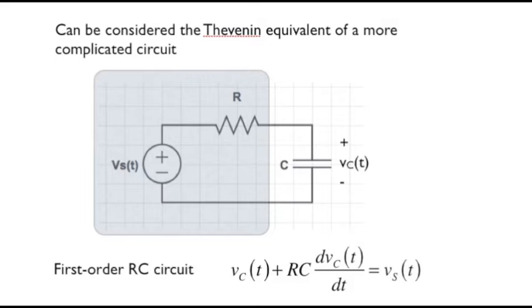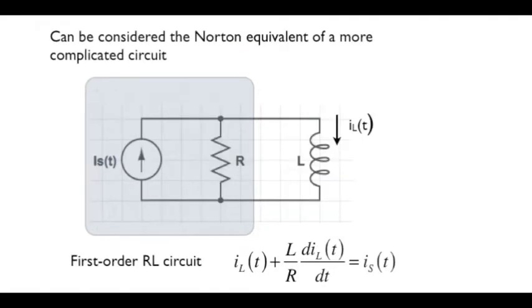We derived the equation on the bottom of the screen using connection constraints and element constraints. Note that it's a first-order differential equation, and that the highest-order derivative is a first-order derivative. And now we want to describe a general solution approach for this type of equation. We've also mentioned RL circuits in today's lesson, and here's a corresponding schematic. Again, this is more generally applicable than one might first think, because any linear source circuit can be expressed in terms of a Norton equivalent, current source in parallel with the resistor. Connection constraints and element constraints will yield the equation on the bottom of the screen.